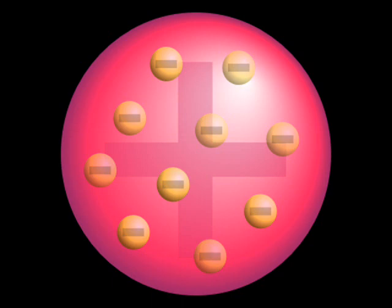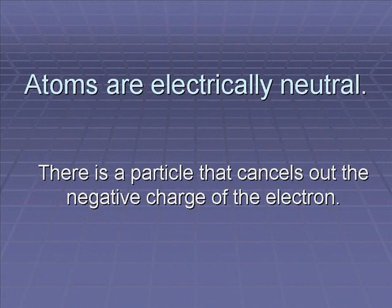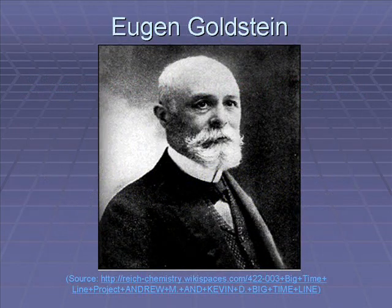Thompson's work with the cathode ray revealed that electrons were negatively charged particles, but atoms are electrically neutral. You can easily see this by touching any object — you don't get a shock when you touch a desktop or a book. So there must be a particle with positive charge that cancels out the charge of the electron. We need to go even further back than 1897 to 1886, when another scientist named Goldstein discovered the proton.